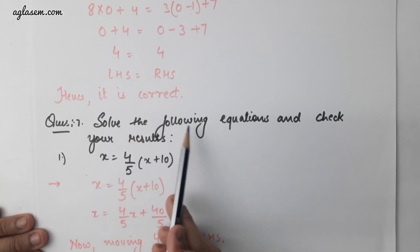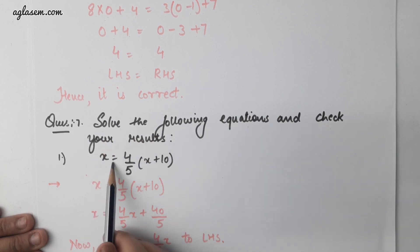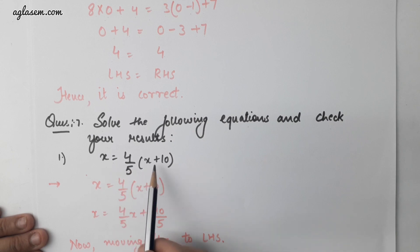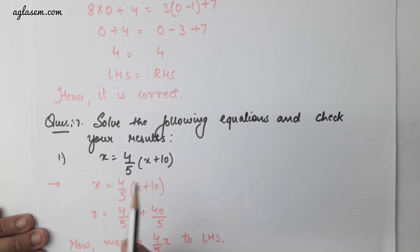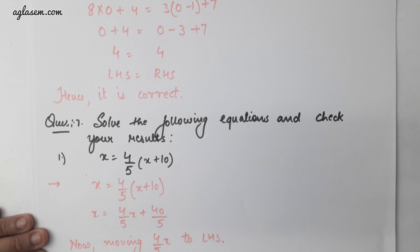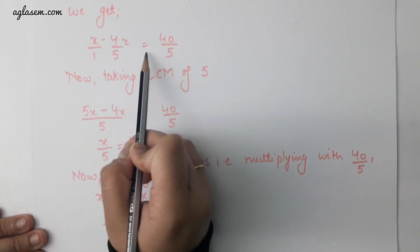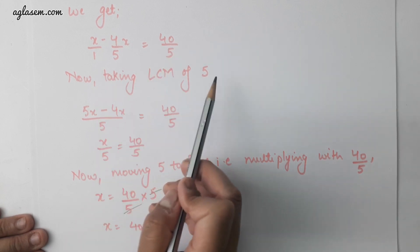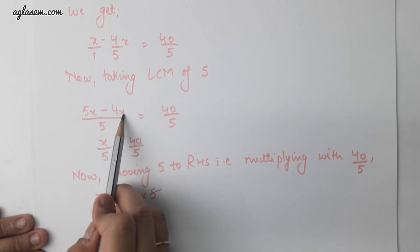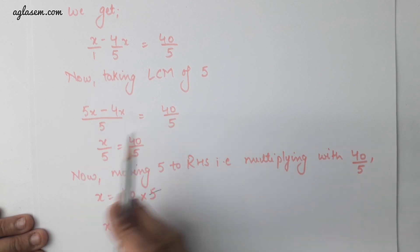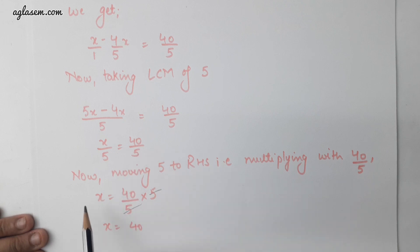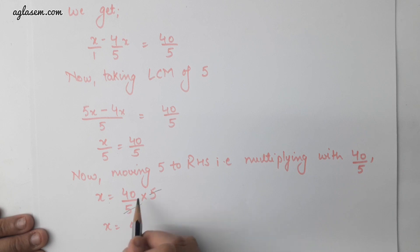Question number 7: solve the following equation and check your results. x equals to 4 by 5 multiplied by x plus 10. Solving the RHS, we get x equals to 4x by 5 plus 40 by 5. Moving 4x by 5 to LHS and taking LCM of 5, we get 5x minus 4x divided by 5 equals to 40 divided by 5, so x by 5 equals to 40 by 5. Moving 5 to the RHS gives x is equal to 40.